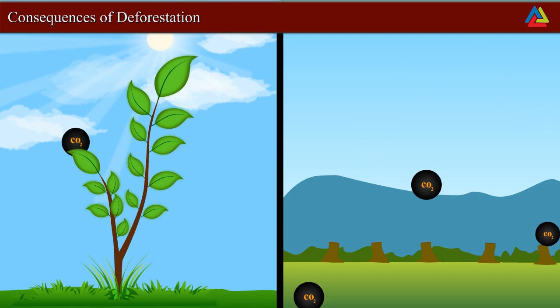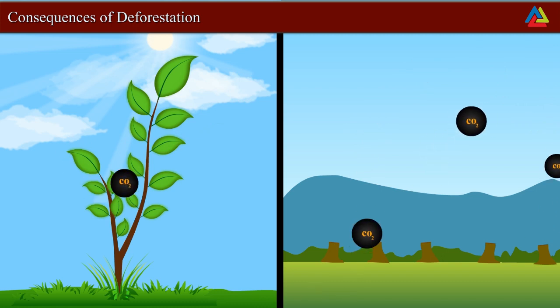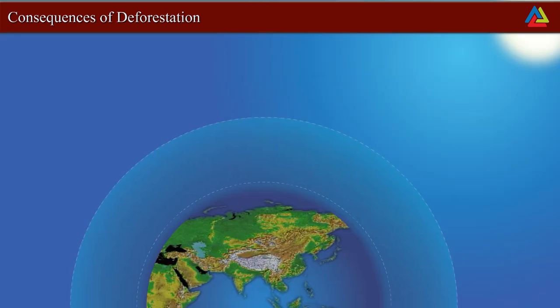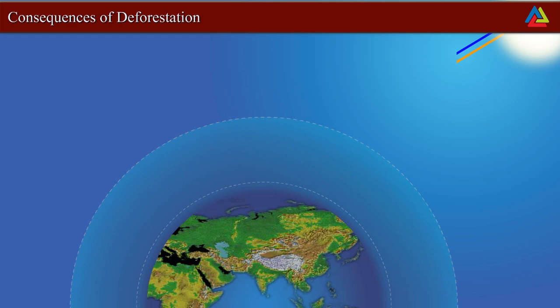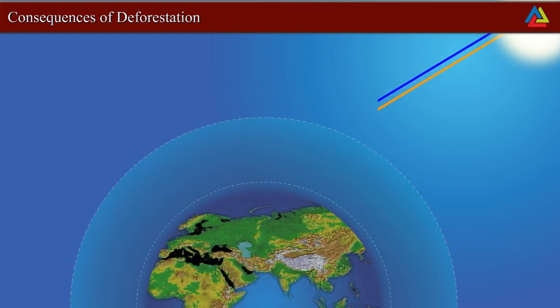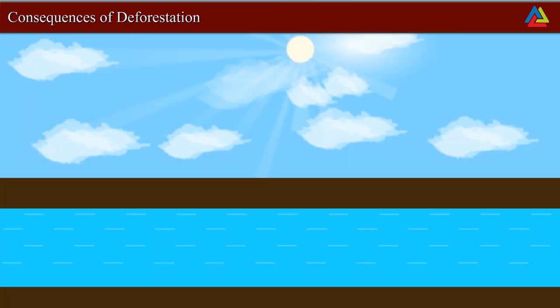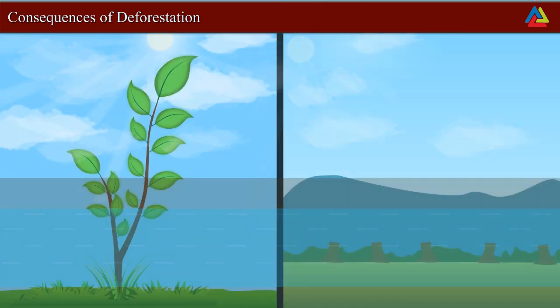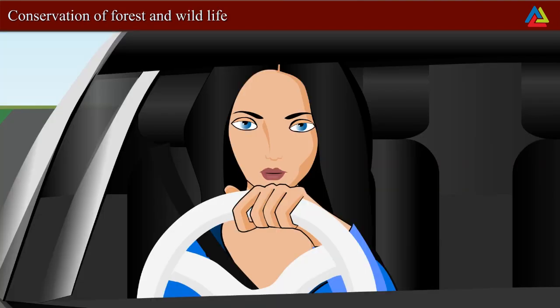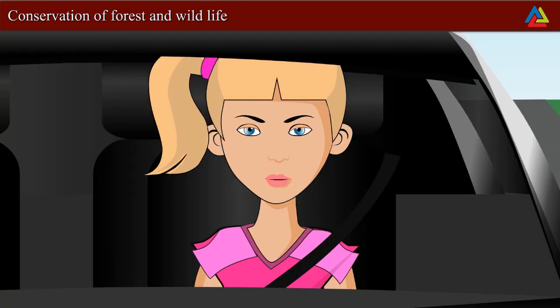The quantity of carbon dioxide will increase in the atmosphere, leading to global warming, as carbon dioxide traps the heat rays reflected by the earth. The increase in temperature disturbs the water cycle and reduces rainfall, resulting in droughts. Ground water level also gets lowered.